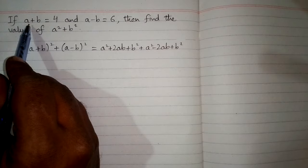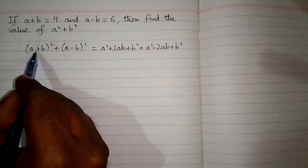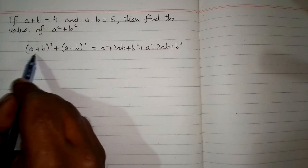Now we have the value of a plus b which is equal to 4 so we will put 4 in place of this a plus b.